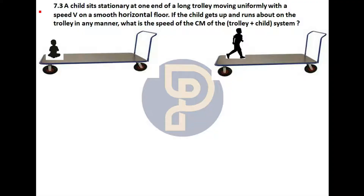Question number 7.3: A child sits stationary at one end of a long trolley moving uniformly with a speed v on a smooth horizontal floor. If the child gets up and runs about on the trolley in any manner, what is the speed of the center of mass of the child and trolley system?